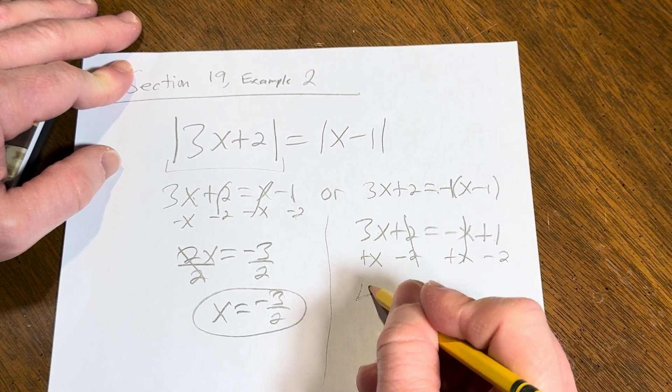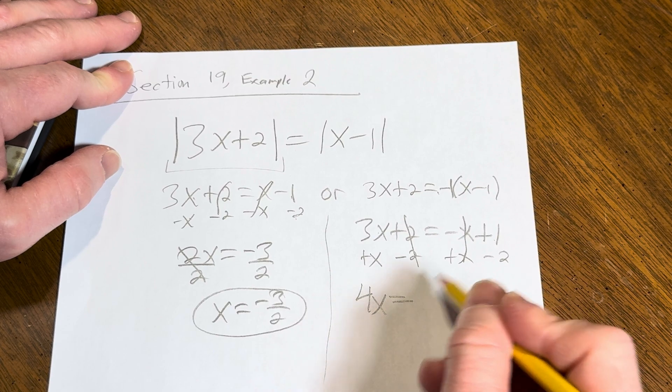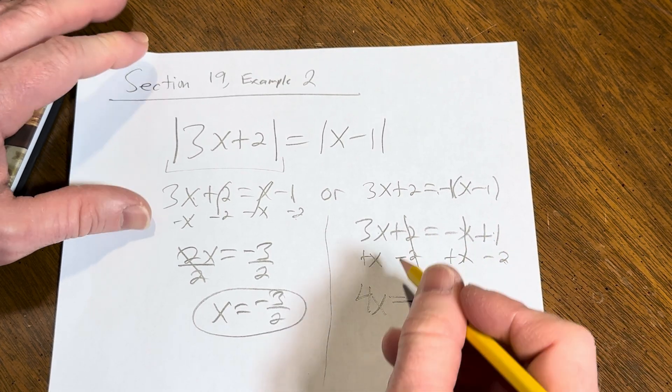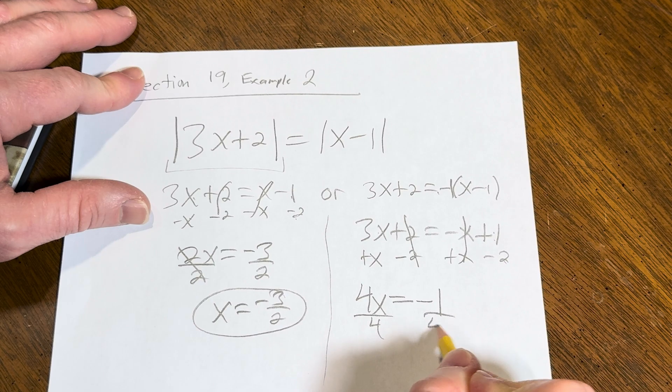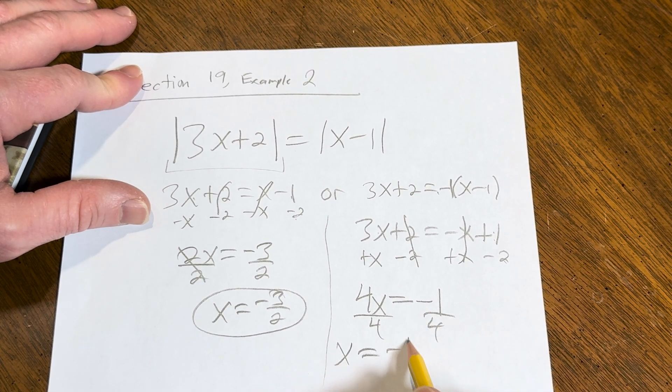3x plus x is 4x. 1 minus 2 is minus 1. Divide by 4. x equals minus 1 fourth.